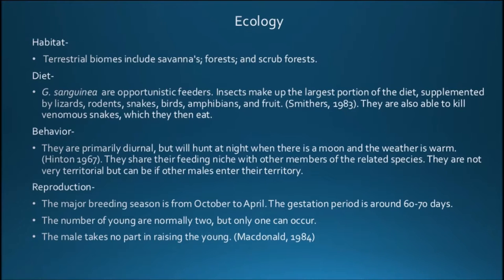Their habitat includes terrestrial biomes such as savannahs, forests, and scrub forests. Most are opportunistic feeders — insects make up the largest portion of the diet, supplemented by lizards, rodents, snakes, birds, amphibians, and fruit. They are also able to kill venomous snakes, which they then eat.